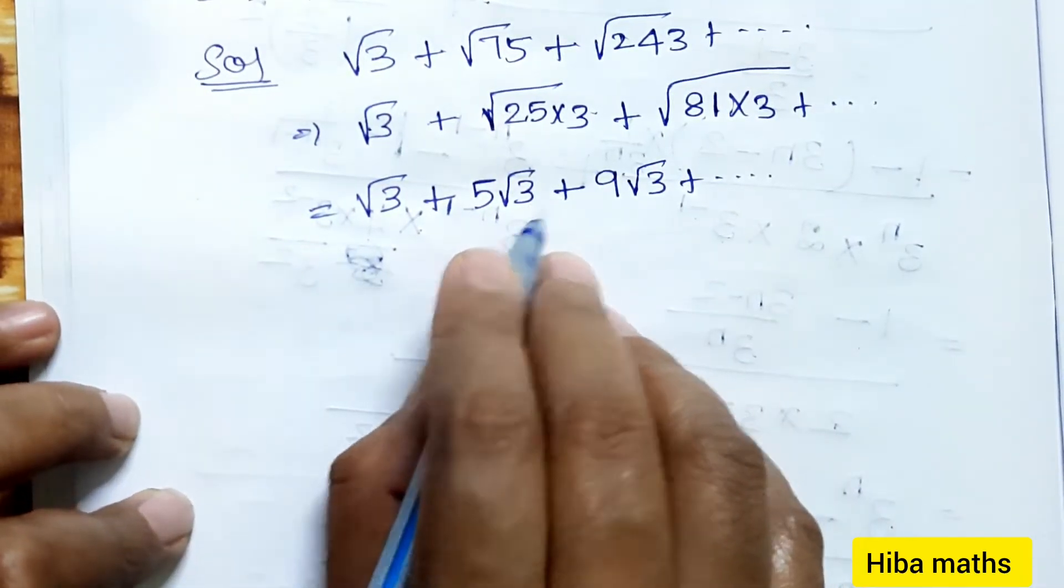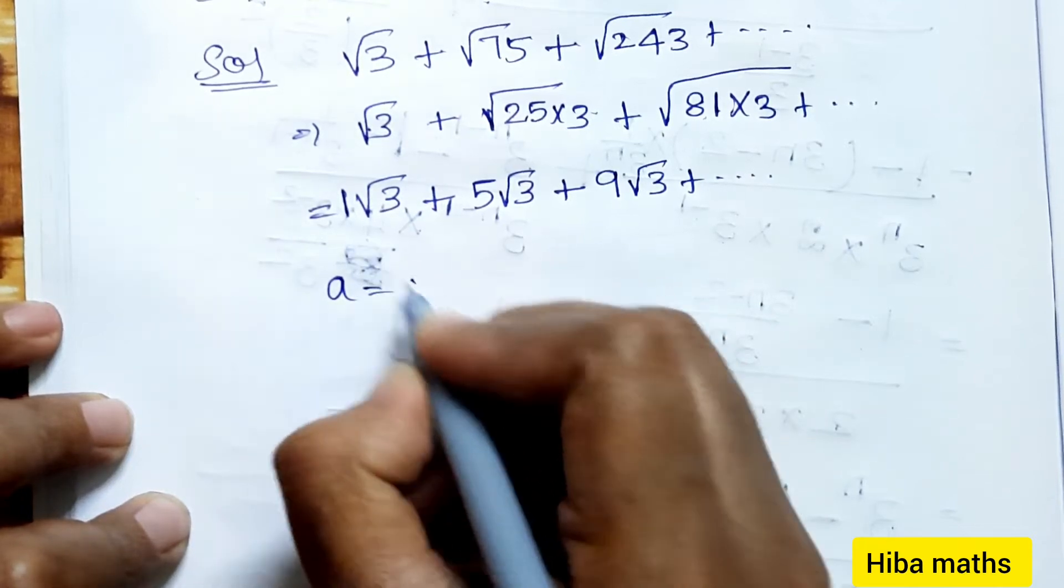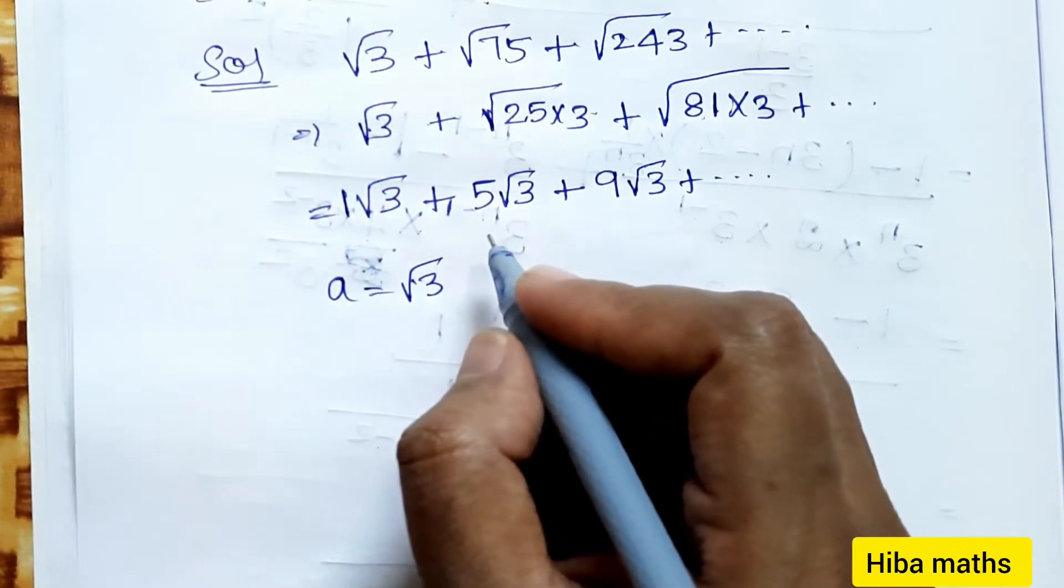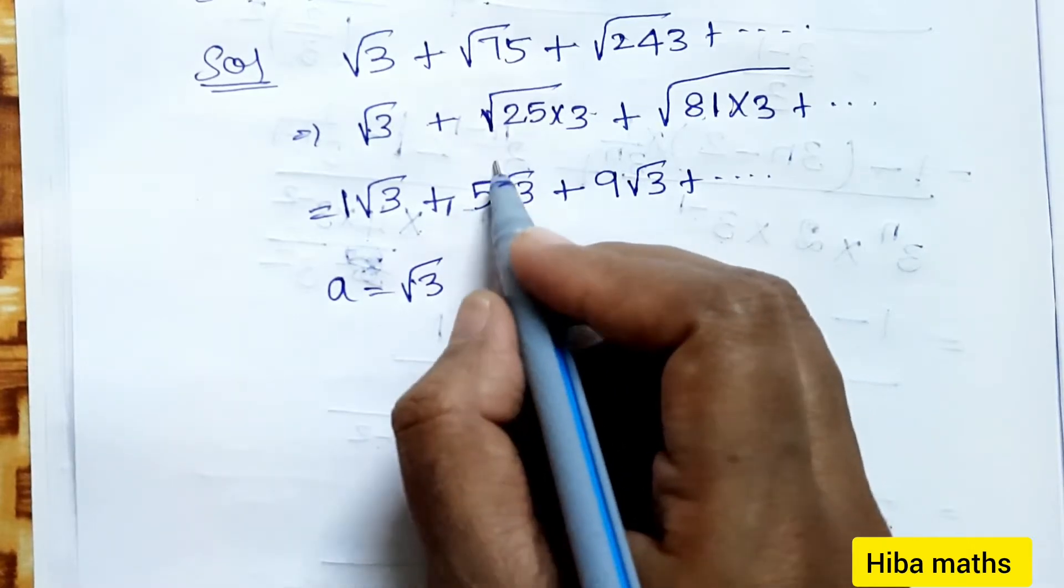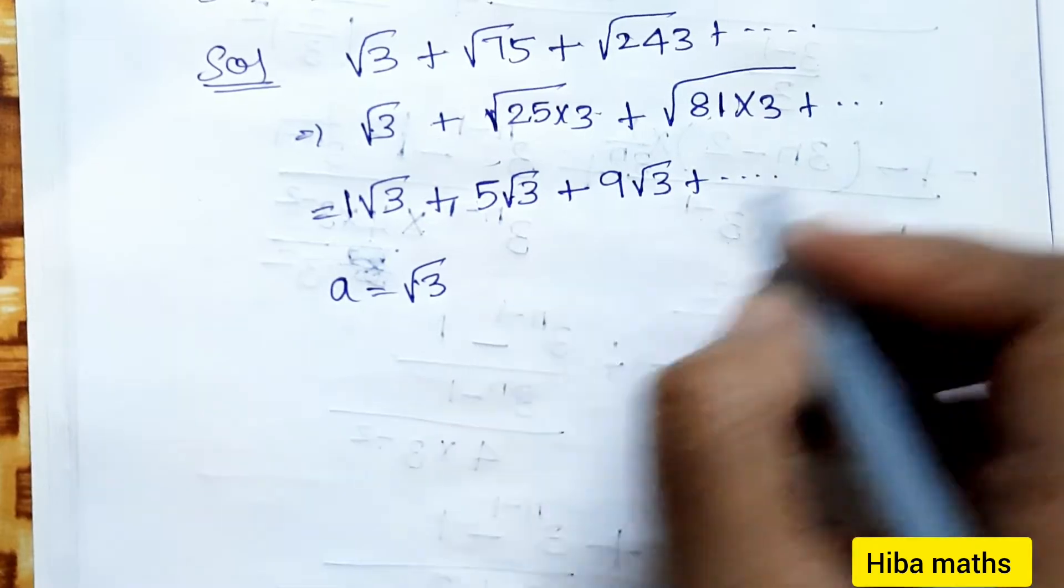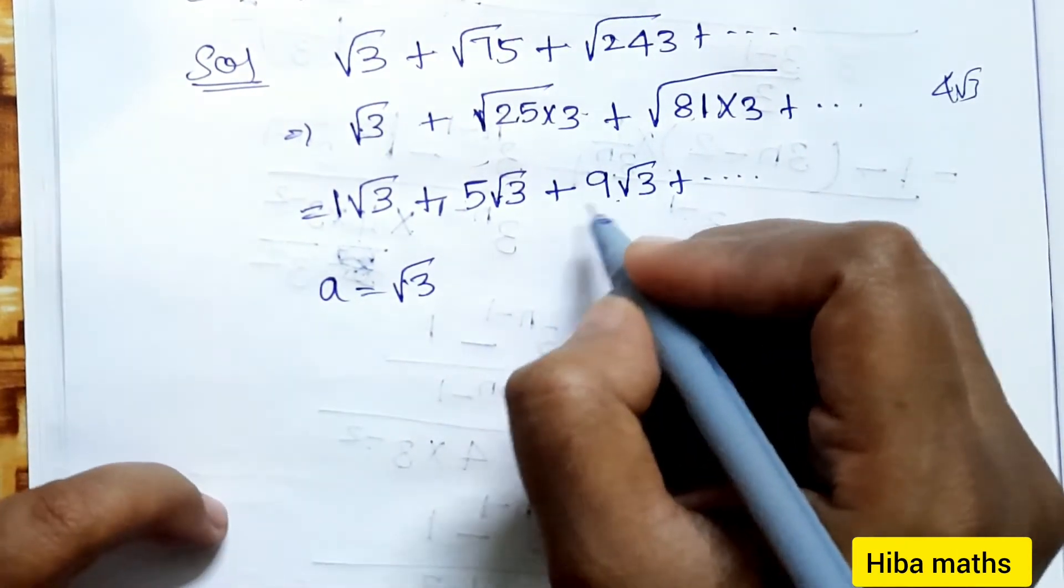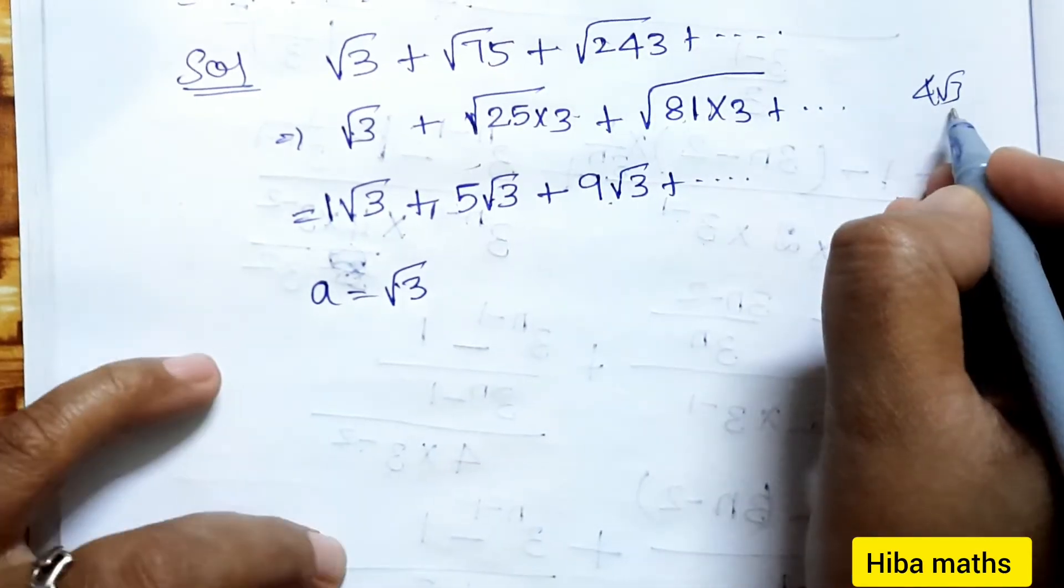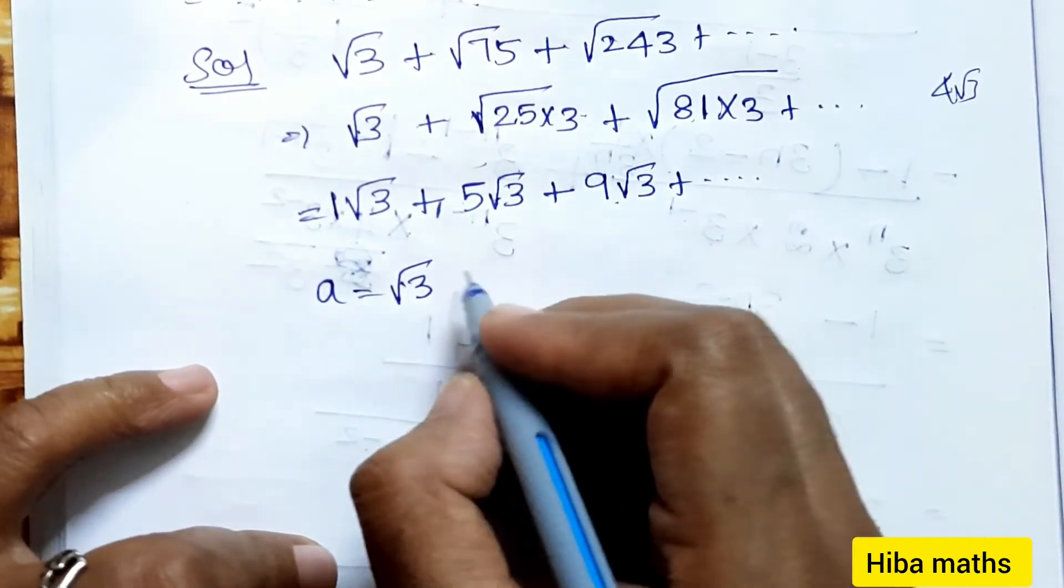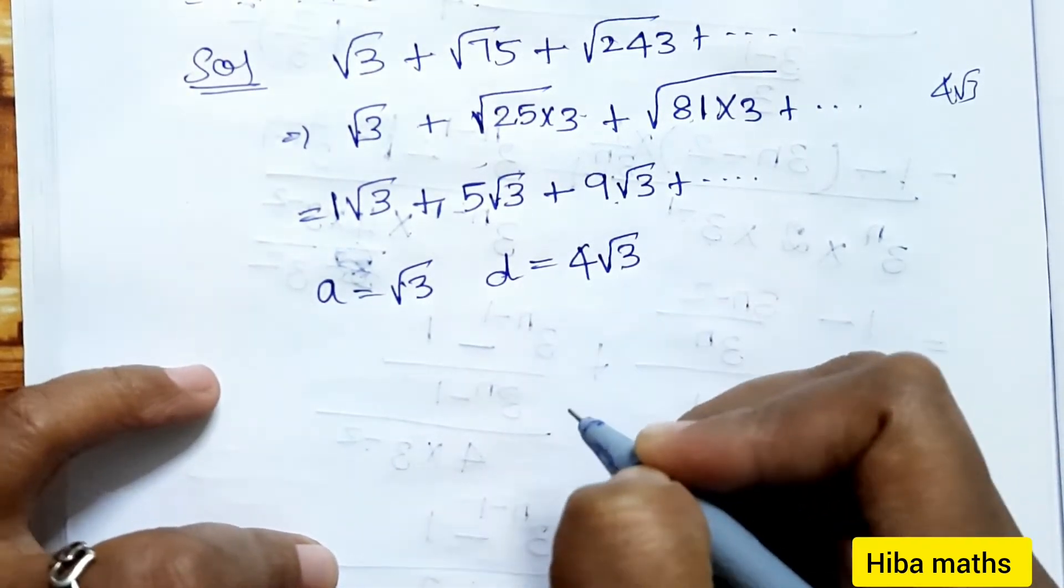Now we need to find a and d. First term a = √3. The second term minus first term is 5√3 - √3 = 4√3. Third term minus second term is 9√3 - 5√3 = 4√3. Same difference, so it's an AP. Therefore, d = 4√3.